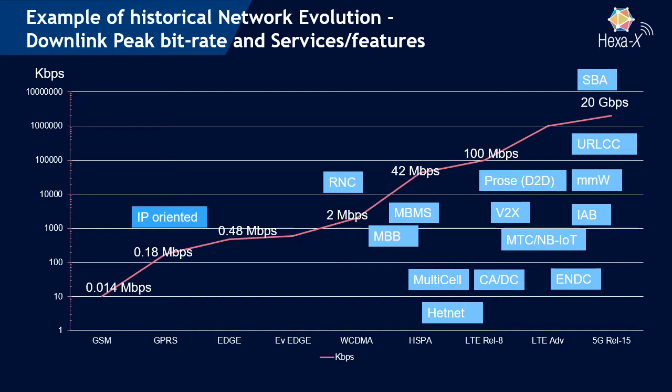At the same time, while early versions focused on voice services, later versions included data packet handling and then more specialized services — for example, vehicle-to-X communication, or ultra-reliable low-latency communication targeting specific use cases and scenarios. So there was an expansion of the communication system from purely voice-based services towards very special-purpose functionality.